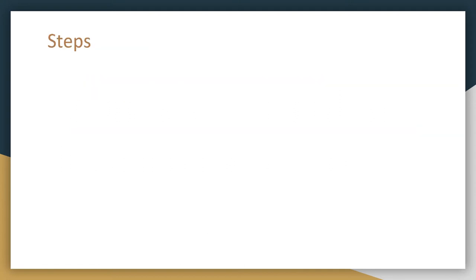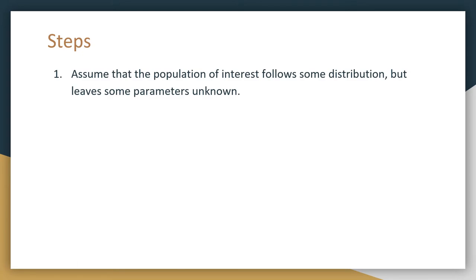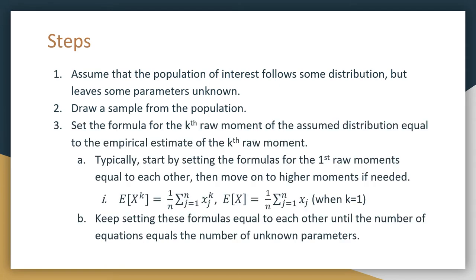What's really nice about the method of moments is that the process can easily be broken down into different steps, which is helpful for working through problems in our class. Step one is to assume that a population of interest follows some distribution but leaves some parameters unknown — usually one or two. Step two is to draw from the population to get a sample. Step three is to set the kth raw moment of the assumed distribution equal to the empirical estimate of the same kth raw moment.